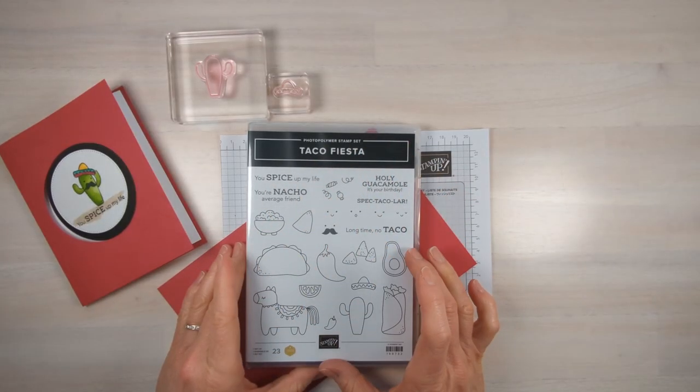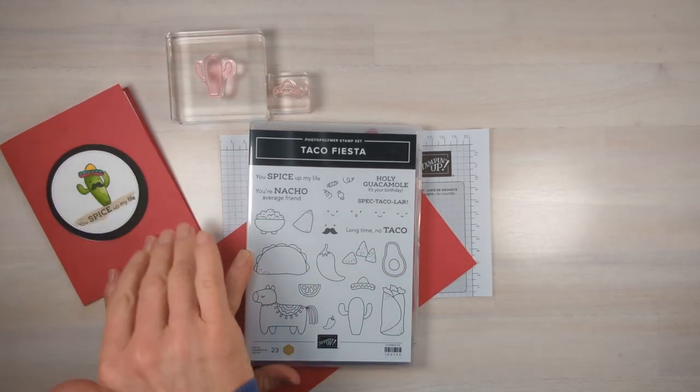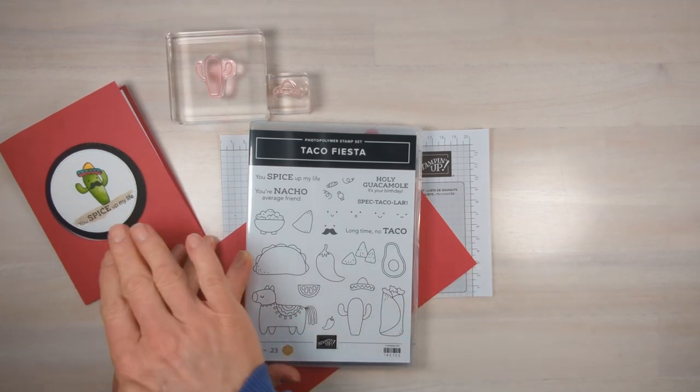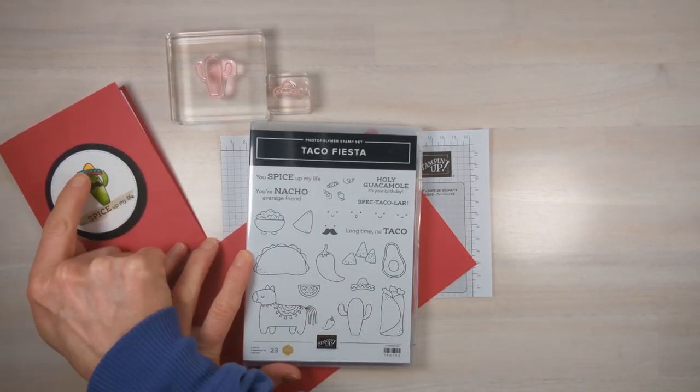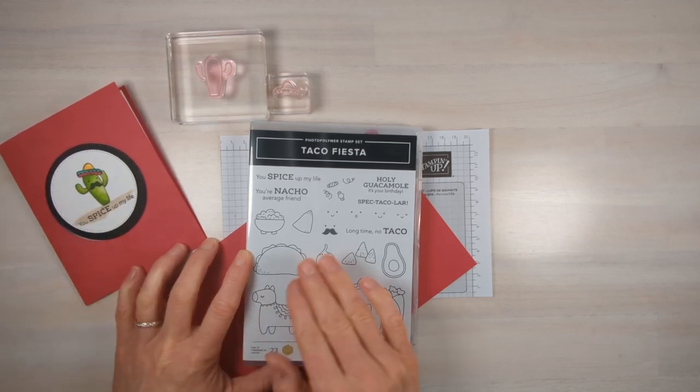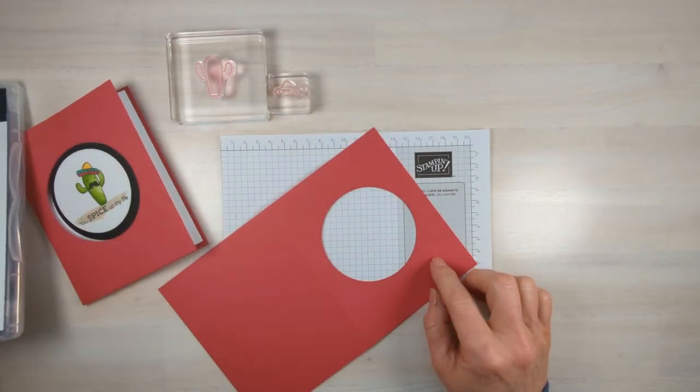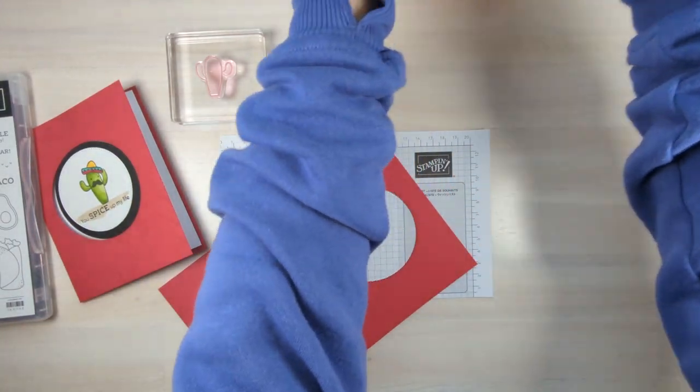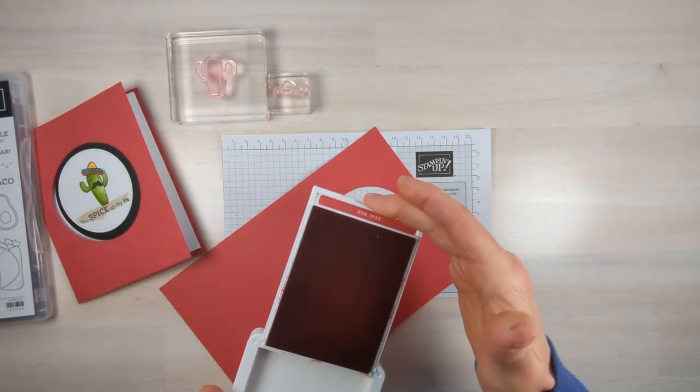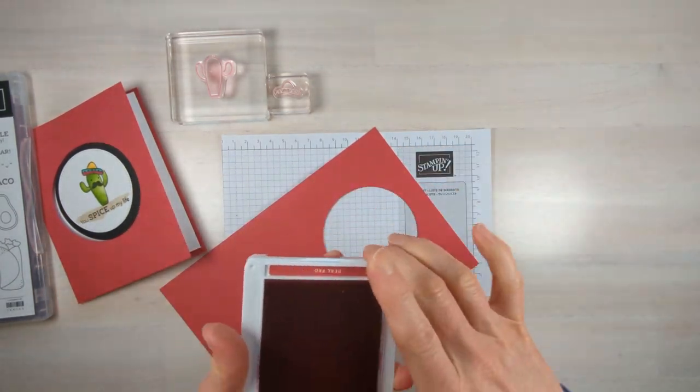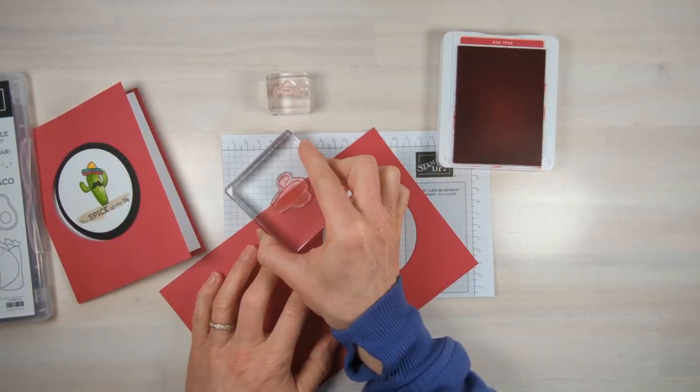Now you're going to grab your stamp set and decide what you want to put in the center of your card. We're also going to decorate this card base. I wanted this to be subtle so that the image in the middle really stands out. So I'm going to use real red cardstock and real red ink so that it just gives a nice subtle image.